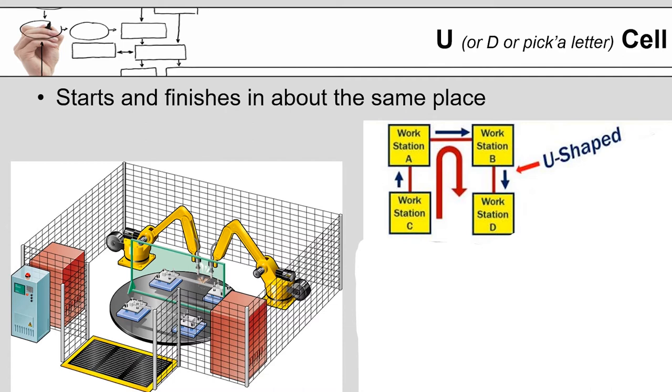But generally a U-cell, the idea is parts come in one side, let's say the left here on the screen in the lower left corner, and it moves around this rotary table and then they come back off on the right side. You can have an operator come in, drop stuff off, walk three feet to the left, pick the next one up, take that off to wherever it needs to go.